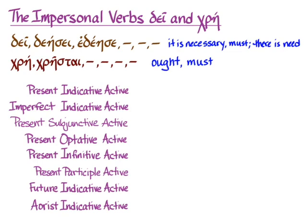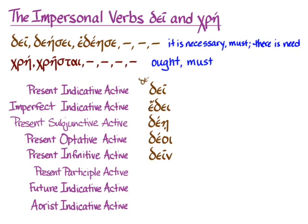For δεῖ, we're looking at a stem δε-, which occasionally contracts with its ending but a lot of the time does not. The present indicative active contracts and we get δεῖ. The imperfect does as well and we get ἔδει. But the present subjunctive doesn't contract and we have δέῃ. Neither does the optative ending, so we have δέοι. The present infinitive contracts and we get δεῖν. The present participle does not contract — participles for these two verbs only appear in the neuter, so we have the neuter nominative singular δέον. δεῖ also has a future δεήσει, and an aorist ἐδέησε with a nu movable.